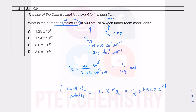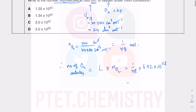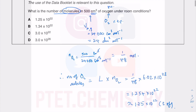So: (1/48) × 6.02 × 10²³ = 1.254 × 10²². If this were a theory paper I'd show full working, but since it's multiple choice that doesn't matter. The answer rounds to 1.25 × 10²².